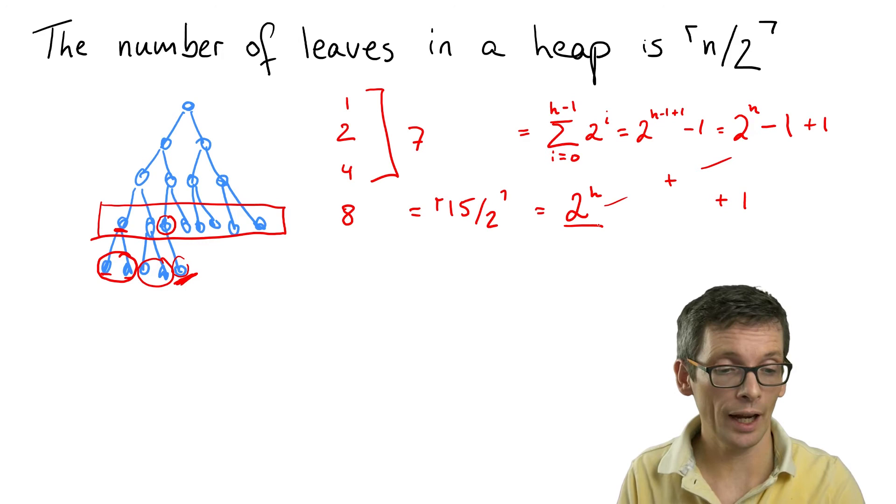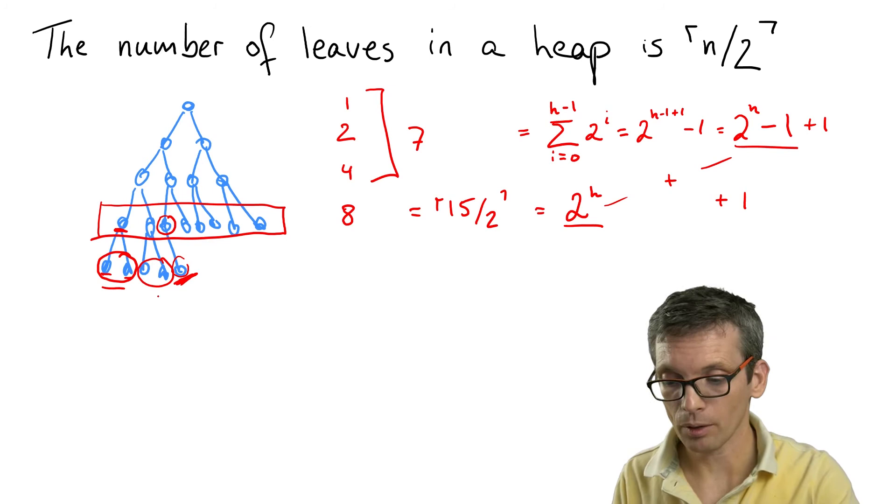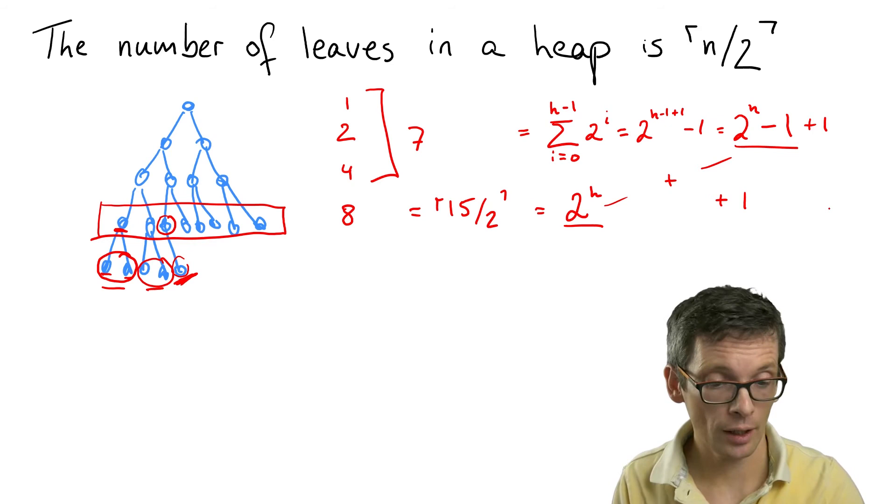So why isn't that a problem? It's not a problem because here we start with two to the h, while here we start with two to the h minus one. So, so far we always added plus one plus one to each of those sums.